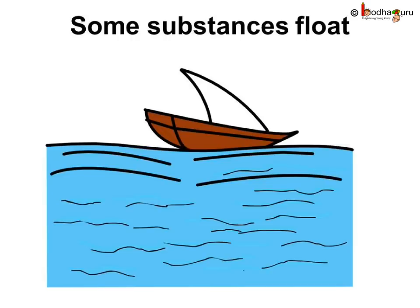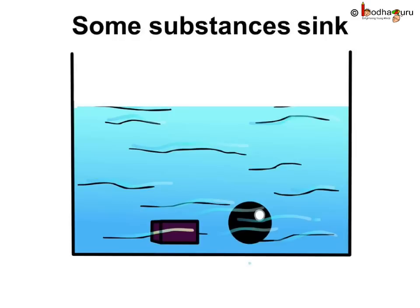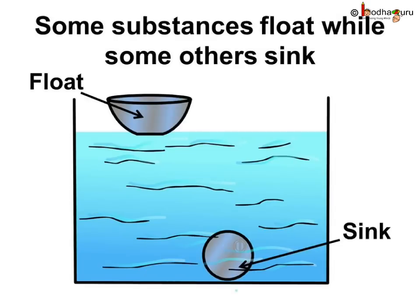Have you wondered why some substances float while others sink in water? For example, a big ship can float in water. But if you put a small iron piece or a stone in water, it sinks. When something is balancing on top of the water, we say it is floating.